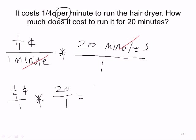I'm actually going to rewrite this. I'm going to get rid of the 1 there. So I get 1 fourth cents times, and I'm not going to write the 1. I'm just going to write 20. Or actually, I am going to put the 1. Keep that there.